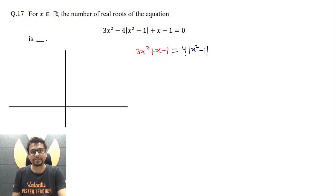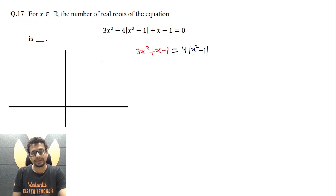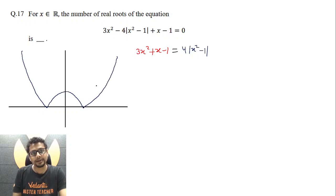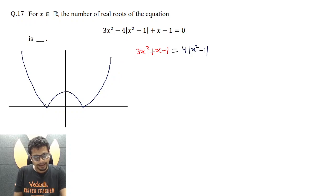And what about the factor of 4? So 4 times means it will decrease more steeply and increase more steeply. So this essentially would be something like this. The x-coordinate here would be -1 and here it will be 1. In fact, when x is 0, it becomes 4.